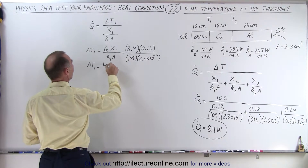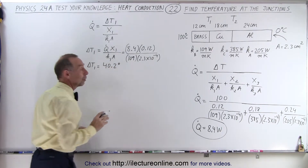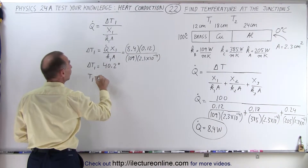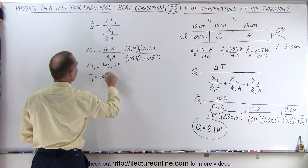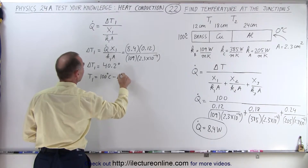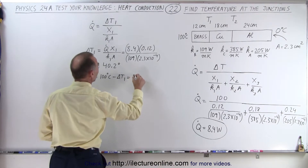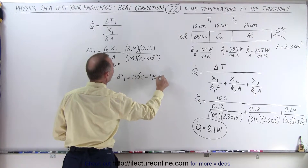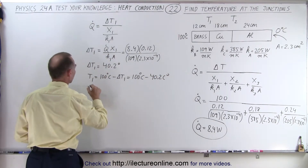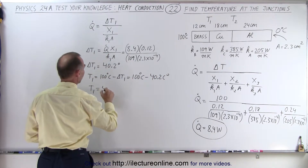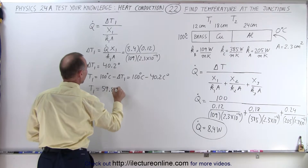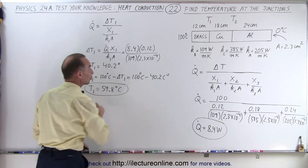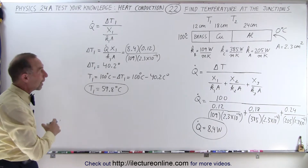Delta T1 is 40.2 degrees, which means the temperature at junction T1 is equal to the initial temperature of 100 degrees centigrade minus delta T1 — that is, 100 degrees centigrade minus 40.2 centigrade degrees — so T1 is equal to 59.8 degrees centigrade.